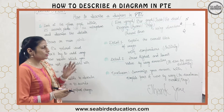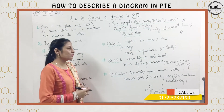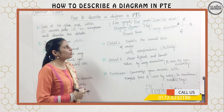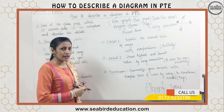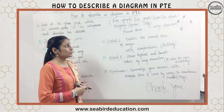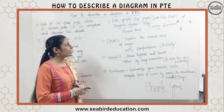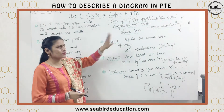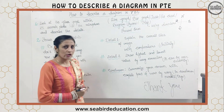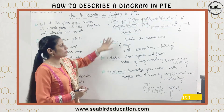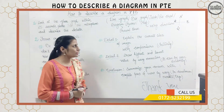First of all, there can be six or seven kinds of diagrams you can have to solve. It can be in the form of a line graph, bar graph, table, pie chart, or any kind of diagram that can be a process or a flow chart. Always try to represent your diagram in present tense.